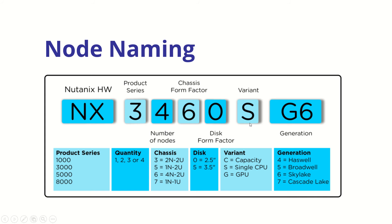The variant block uses letters: 'C' for capacity, 'S' for single CPU, and 'G' for GPU. The final part is the CPU generation — G6 means sixth generation Skylake. Looking at all of this, you should now be able to identify the model, hardware type, and configuration just from the model name.